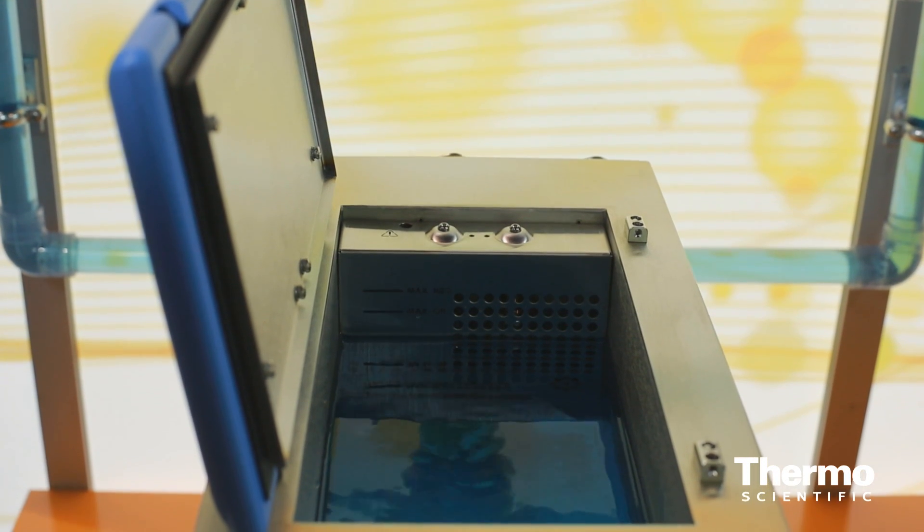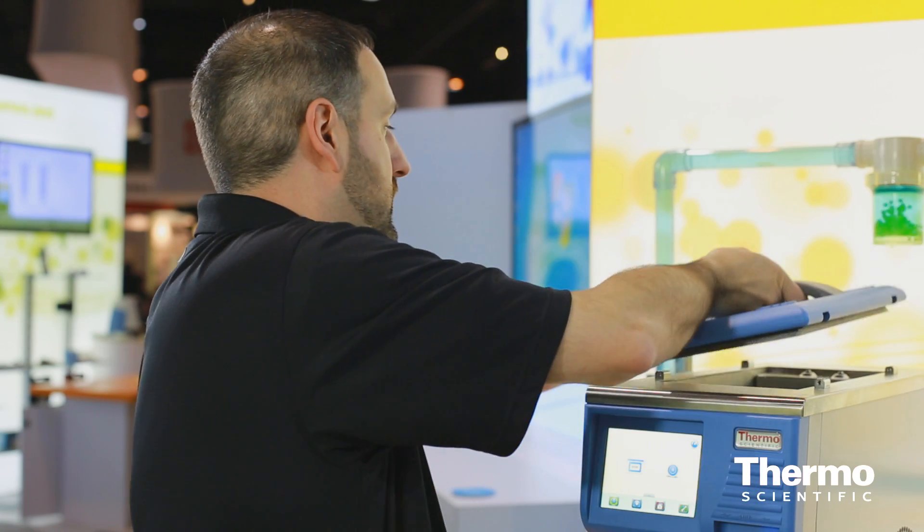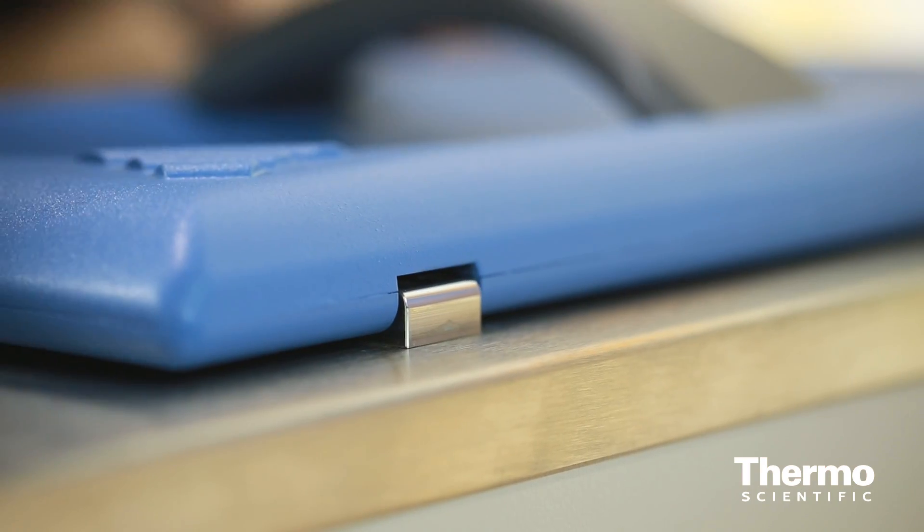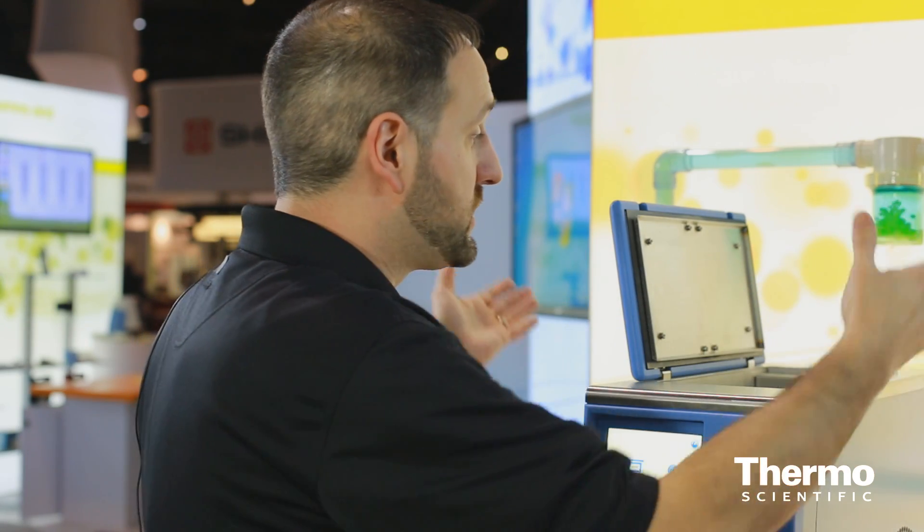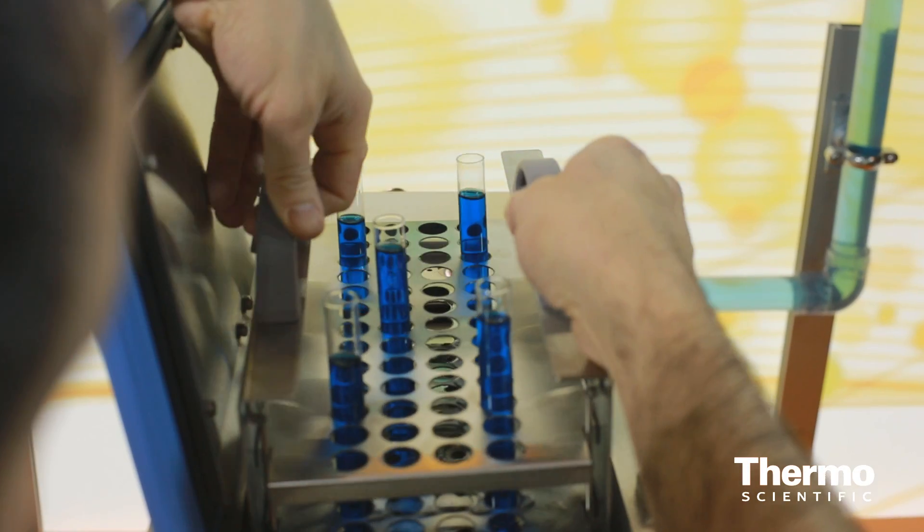With the VersaLid, it's hinged. Any condensate would run back into the bath. And we've also made it for right-handed or left-handed operation or, as I mentioned, if there's a tight lab space and you can only open it in one direction.